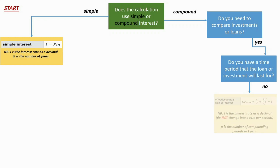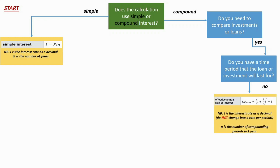If you're not given the number of years, you're going to use the effective annual interest rate formula. It's very important to remember that i is the interest rate as a decimal and you do not change that to a rate per period — on all your other formulas you have to change to a rate per period first, but this is the exception. N is the number of compounding periods in one year, because you're comparing two rates in a one-year period.